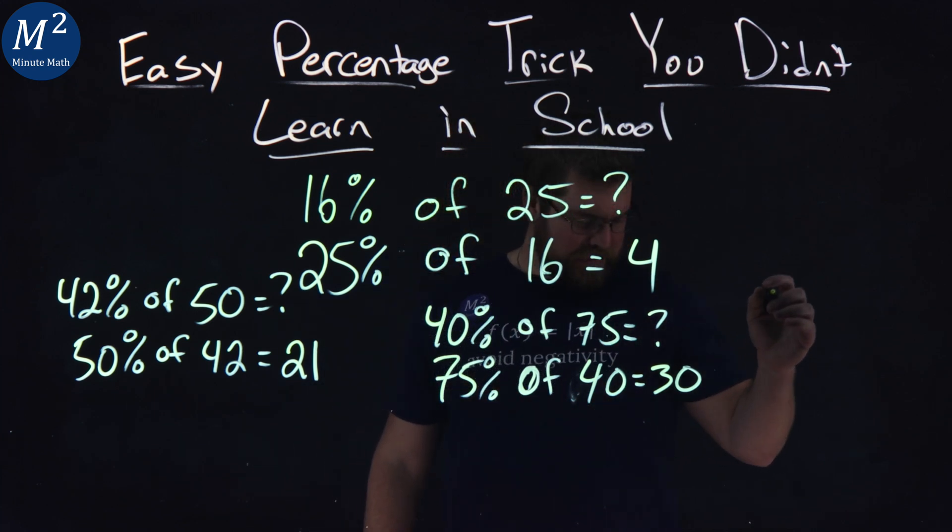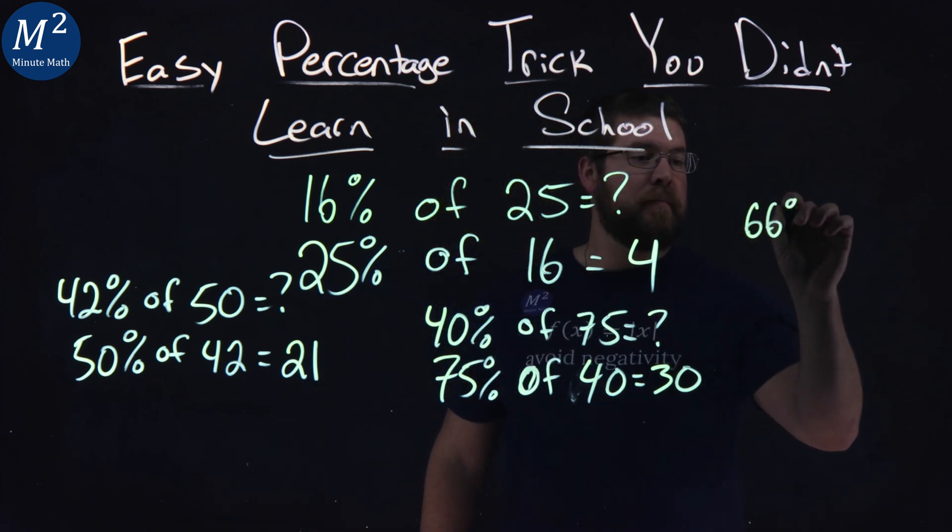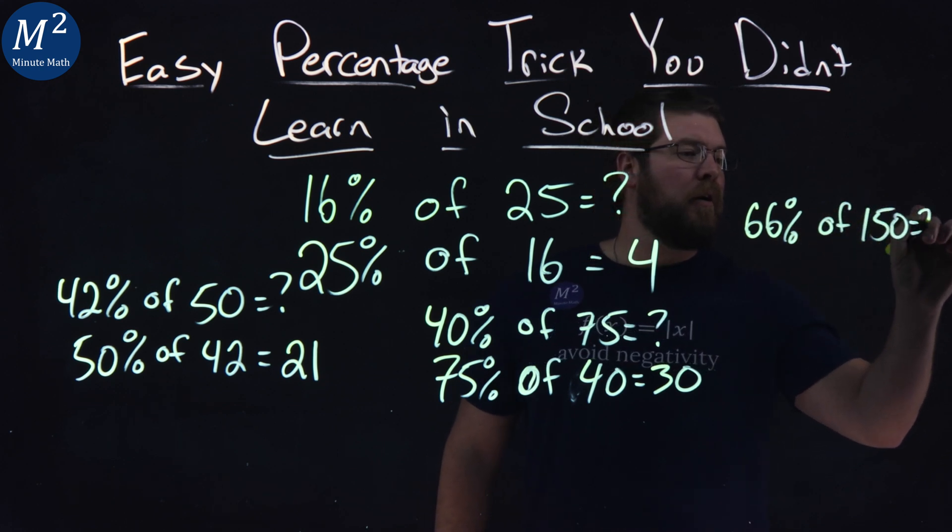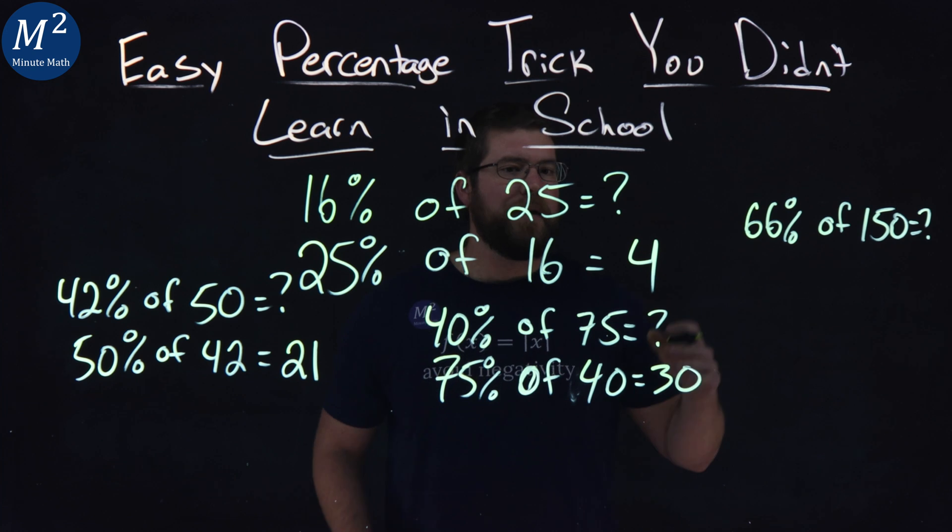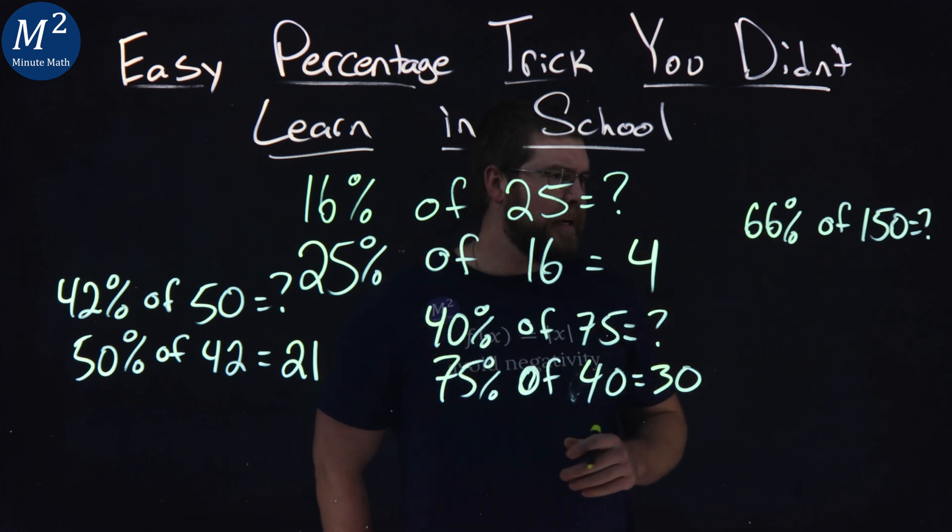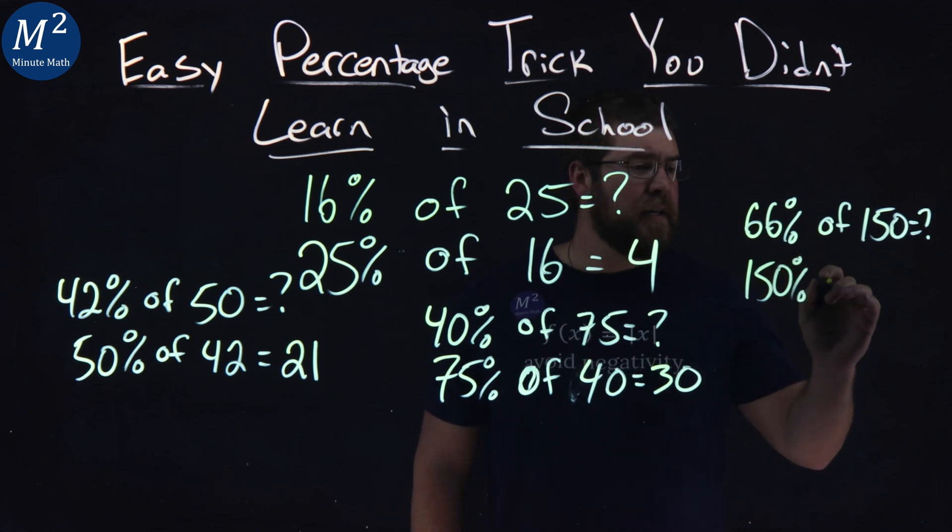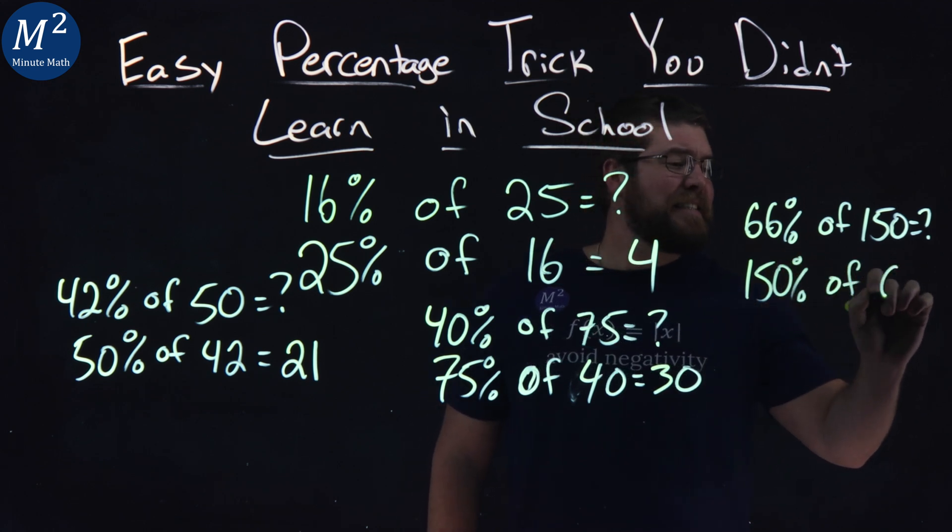Now, lastly here, 66% of 150. You're thinking, hey, Sean, does this work? Are the numbers larger than 100%? Well, let's see. Flip that around. 150% of 66.